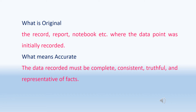What is original? The record, report, or notebook where the data point was initially recorded is the original. The data as it was first recorded should be retained as the original. What is accurate? The data recorded must be complete, consistent, truthful, and representative of facts. The actual events that happened should be recorded, and the actual data should not be masked or manipulated.